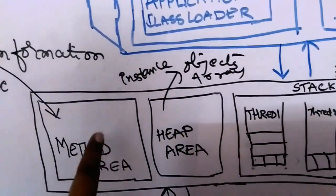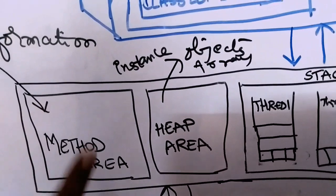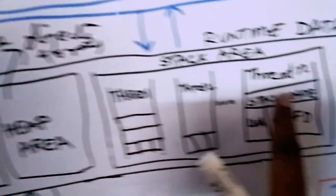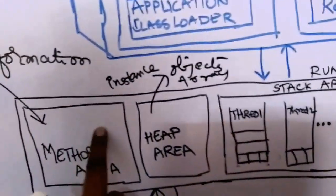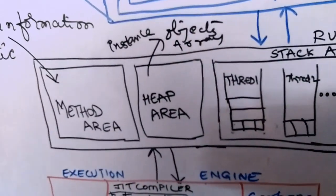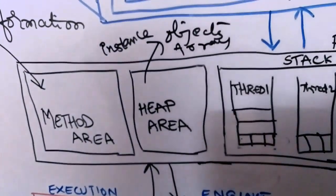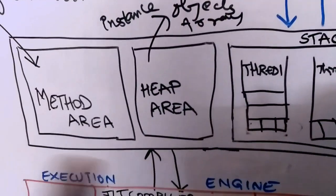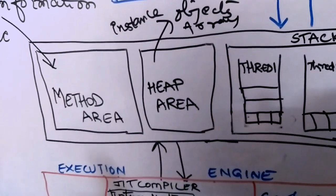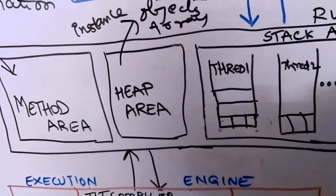These two memory areas are very important. Per JVM there will be only one method area and only one heap area, and all threads share them. That is the reason method area and heap area are not thread safe. This is also an interview question: where do instance variables, objects, and static variables get stored in JVM?